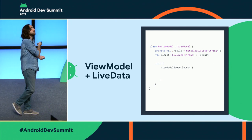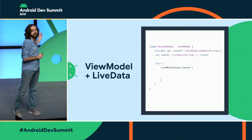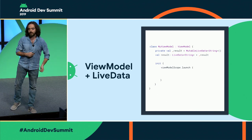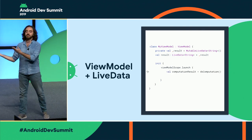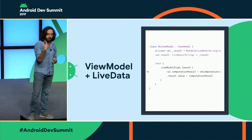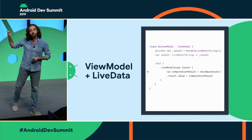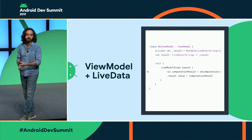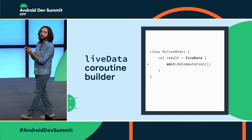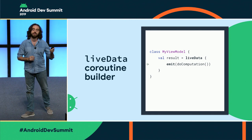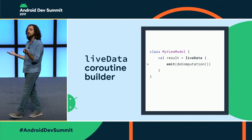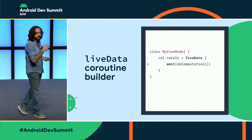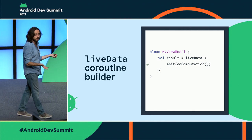Now let's look at how we can use the viewModelScope with LiveData. Here we have a common pattern where you have a private mutable LiveData that you provide as a public property to your UI. Inside, we launch our viewModelScope, do some suspending computation, and when the result comes, we update our private mutable LiveData. Notice I'm just setting the value — not calling postValue — because this runs on the main dispatcher by default. Since Lifecycle 2.2, there's a much nicer way to do that with a new builder called liveData. This liveData builder gives you a coroutine block as a scope for your LiveData. It starts executing when the LiveData is observed and is canceled when the LiveData is not used anymore, and inside there, you can emit.